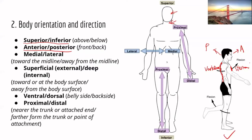Next is medial and lateral. Medial means toward the midline, and lateral means going away from the midline. For example, we can look at the heart and the lungs: the heart is medial to the lungs, and the lungs are lateral to the heart. Or consider the eyes and the nose: the eyes are lateral to the nose, and the nose is medial to the eyes.